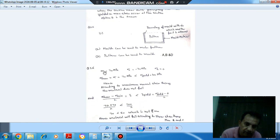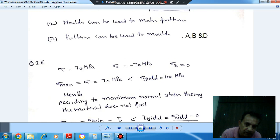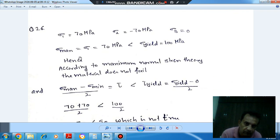So here sigma 1 is 70 MPa, sigma 2 is minus 70 MPa, and sigma 3 is 0. Sigma max here from these three is 70 MPa.